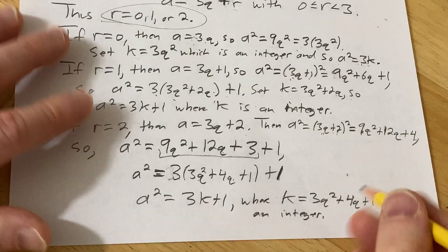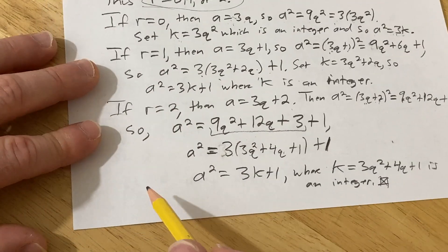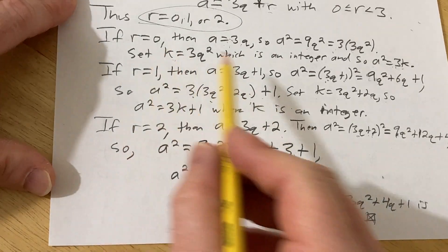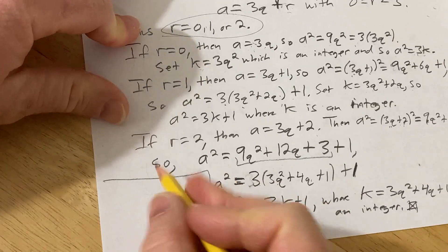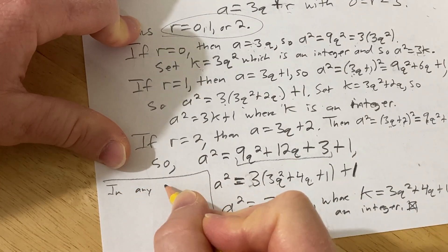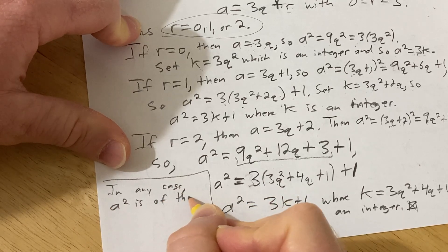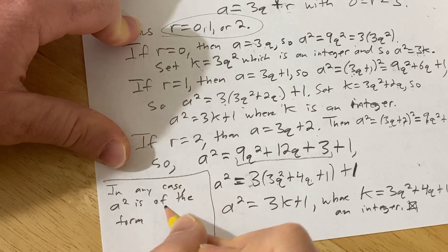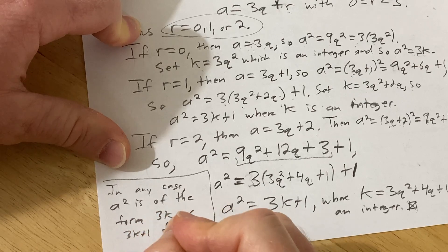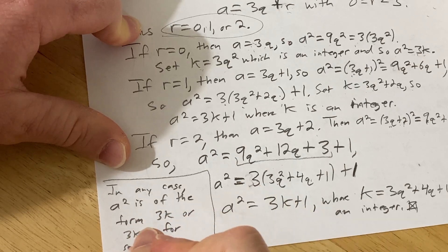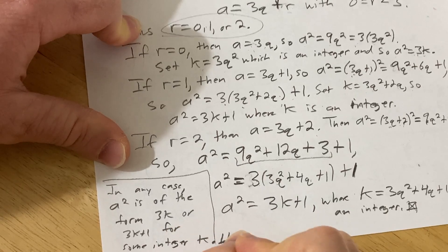And so the proof is complete. So I'm just going to put a little box there. In any case, a squared is of the form 3k or 3k plus 1 for some integer k. And that completes the proof.